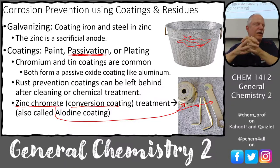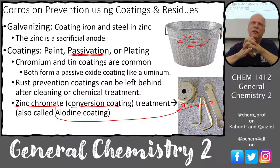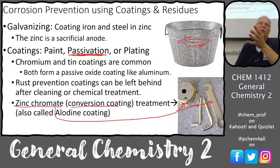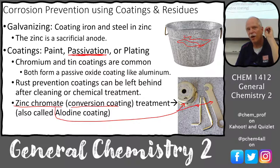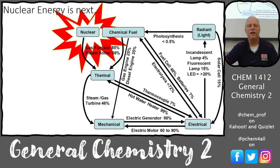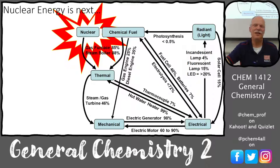Millions of dollars go into corrosion prevention, especially for pressurized pipe systems like fire loops at 150 psi — a rust-through causes a blast of water that can ruin a building. Next time we're going to start talking about nuclear power, nuclear energy, and nuclear reactions.